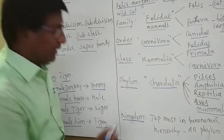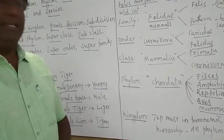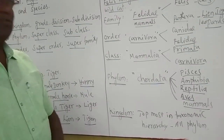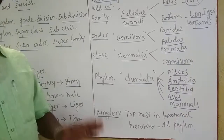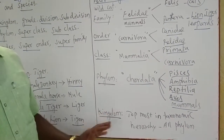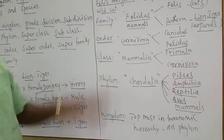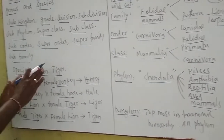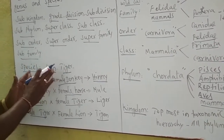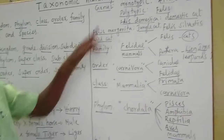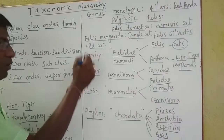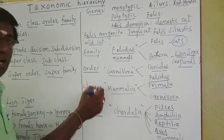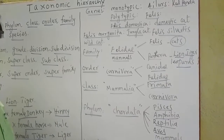The last and highest taxonomic category is the kingdom. All phyla are put into the kingdom — including all animals. So this is the taxonomic hierarchy. To sum up: species is the basic unit; two or more species are put into a genus; many genera are put into a family; one or more families are put into an order; one or more orders are put into a class; one or more classes are put into a phylum; and all phyla come into the kingdom.